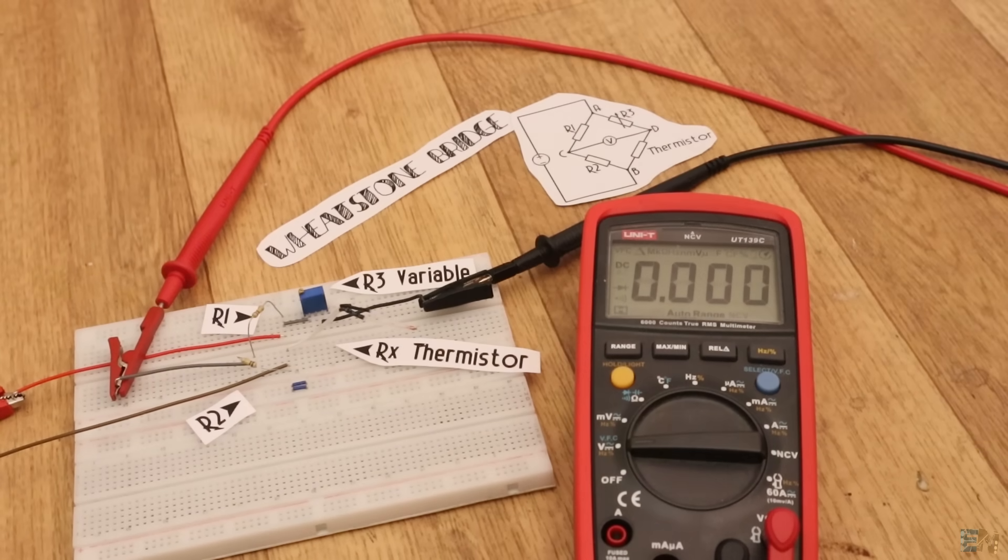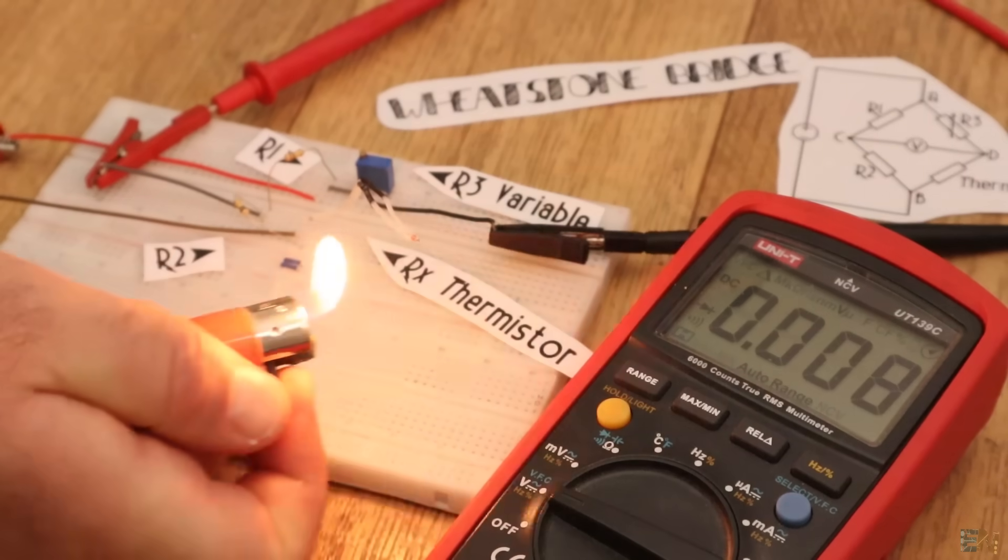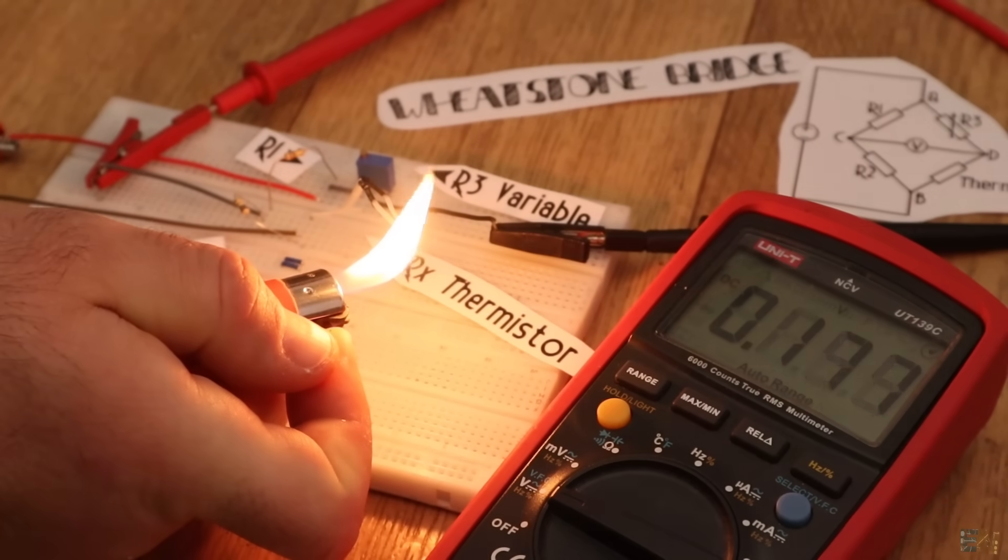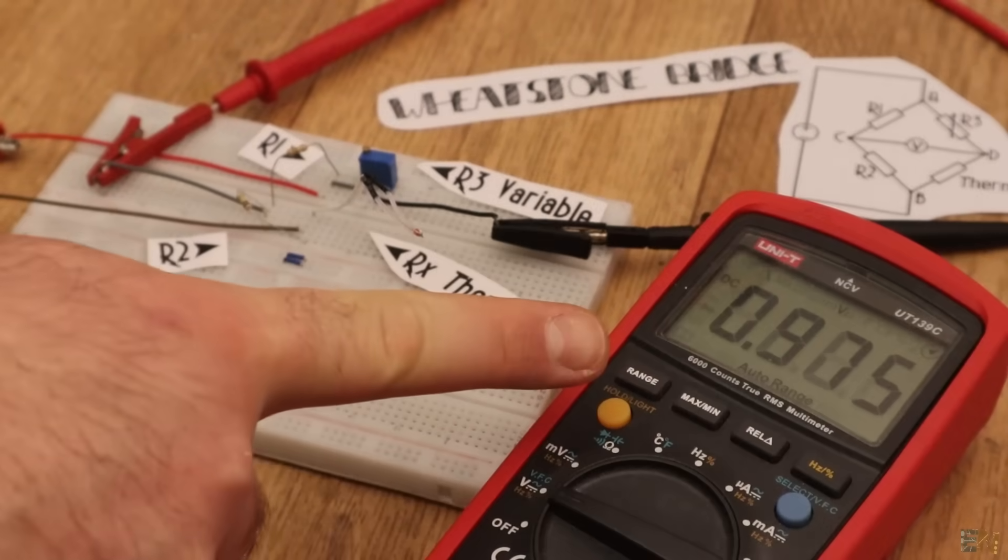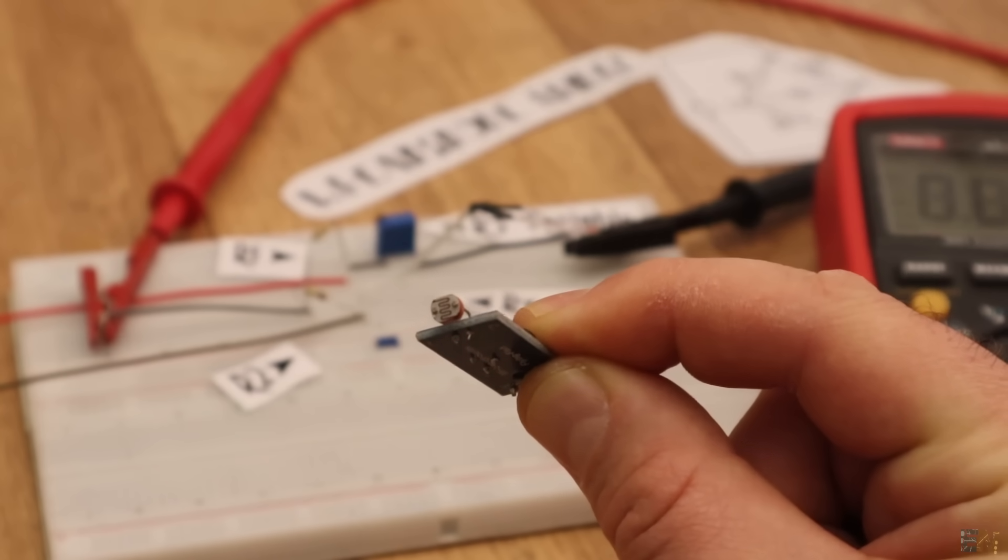I rotate the variable potentiometer till the voltage is 0 volts between points C and D. So right now the bridge is balanced. But now I heat up the thermistor and as you can see, the voltage is changing and I could now measure temperature. And the same goes for this LDR or light-dependent resistor.